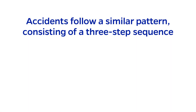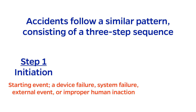Most accidents follow a similar pattern consisting of a three-step sequence. The first step is an initiating event. Examples include failure of devices, such as a temperature measurement probe, a system failure, such as a control valve actuated by a feedback loop.